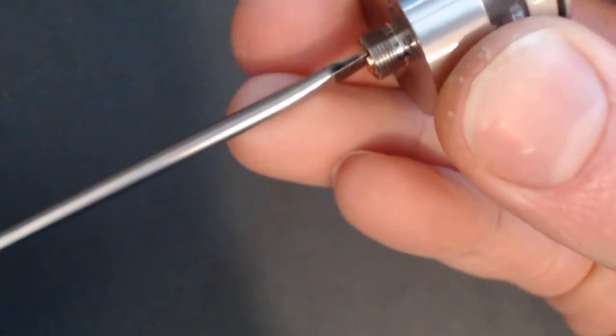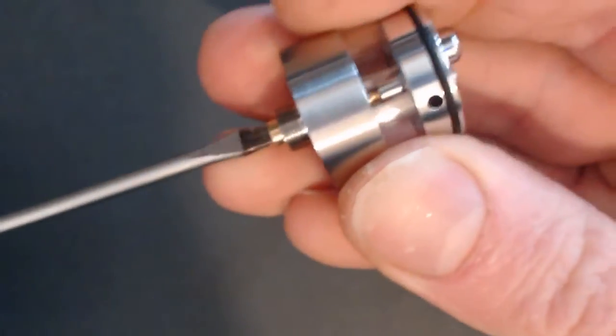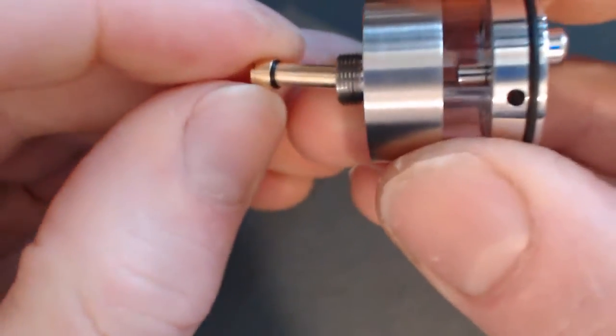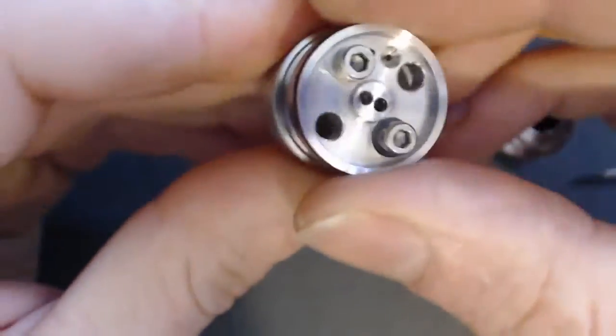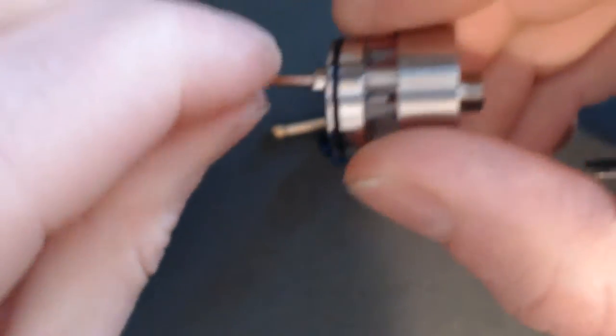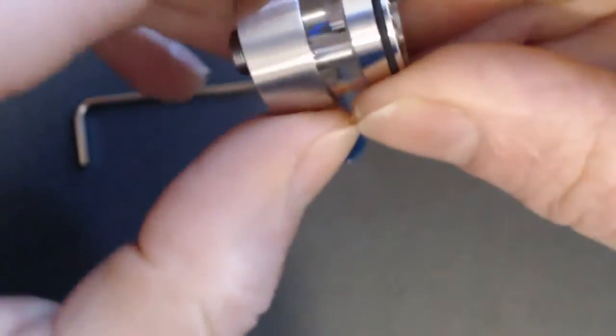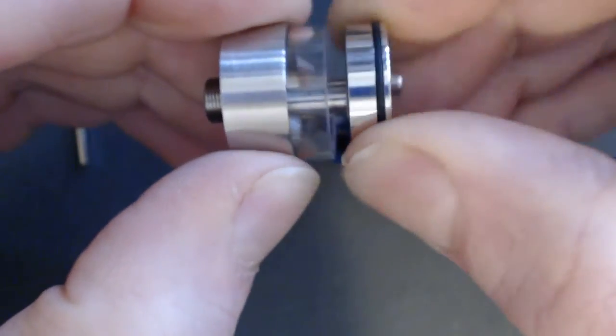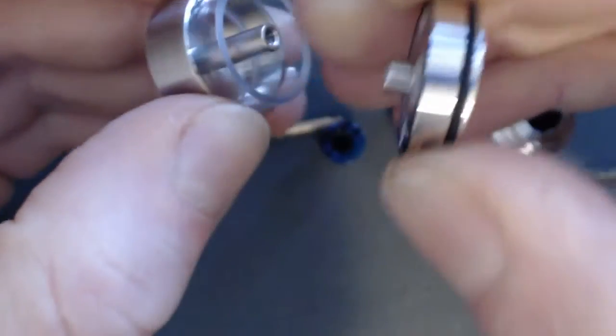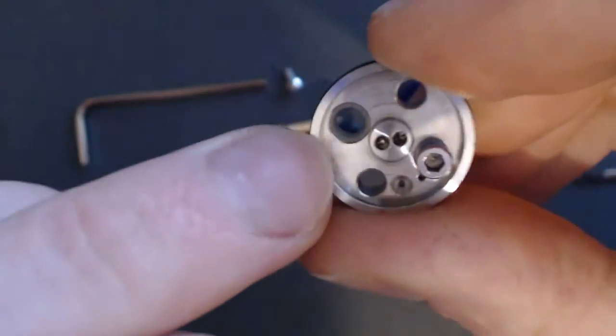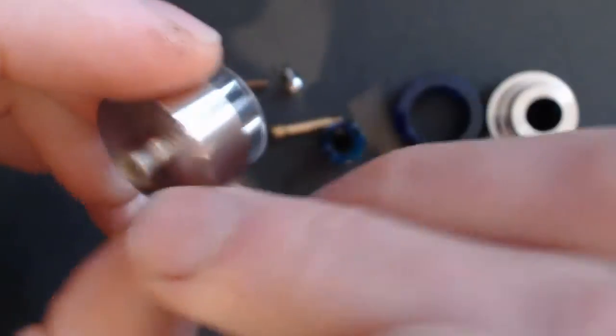Let's go ahead and take the rest of it apart so we can see how it's put together. Just undo the 510 screw first of all, which has a little o-ring on here which is just sort of a safety precaution. And then we need to take off the negative post screw.